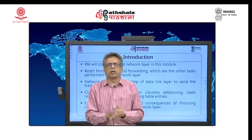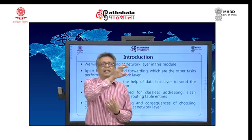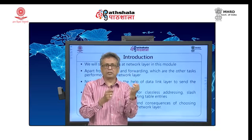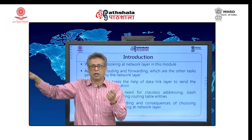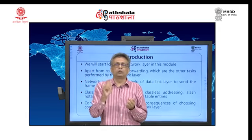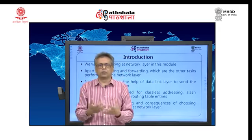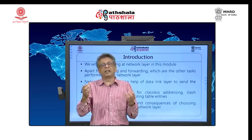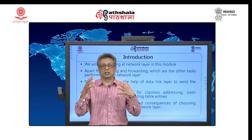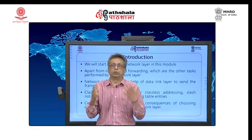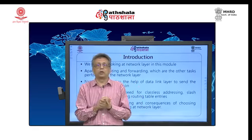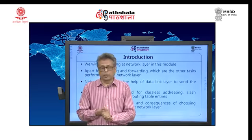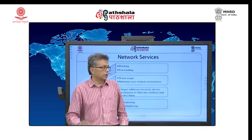Every network layer requires addressing individual entities. It has to route from a sender's place to the receiver. Unless you know every individual uniquely, you will not be able to route. It is like a postman — a postman cannot deliver anything to any destination unless everybody has a unique address and the postman knows everybody's unique address. We will be talking about different types of classful addressing used by IP.